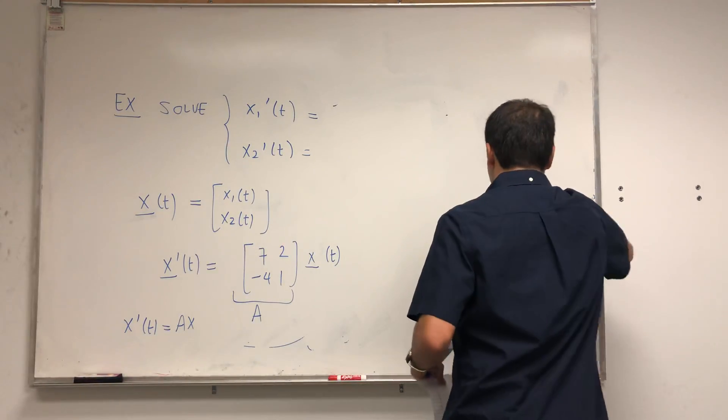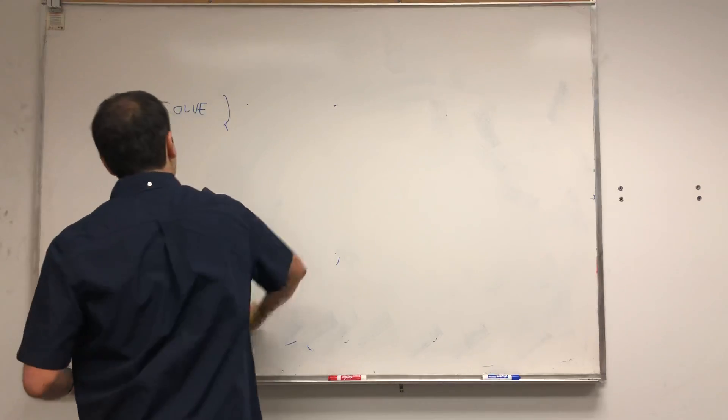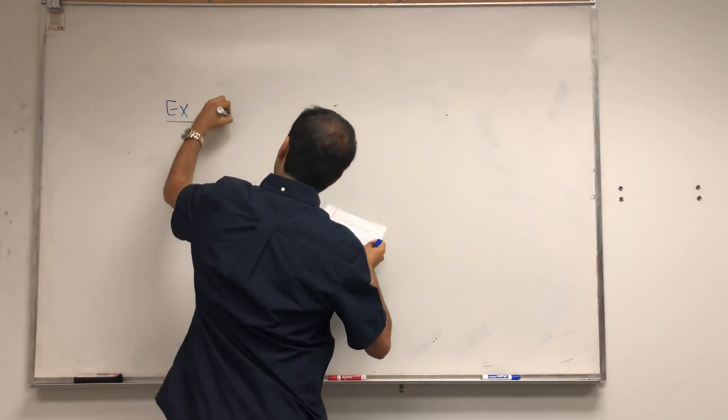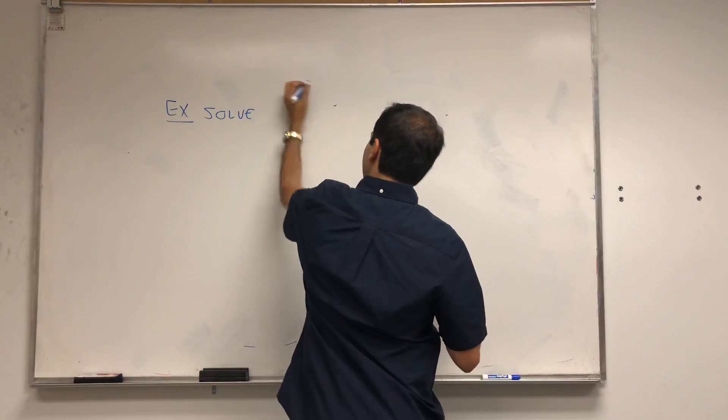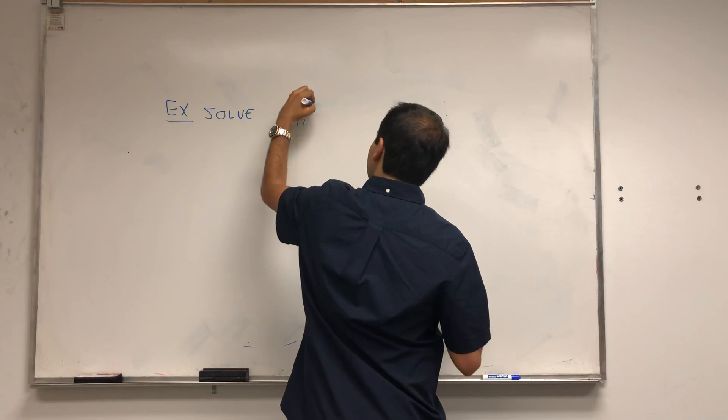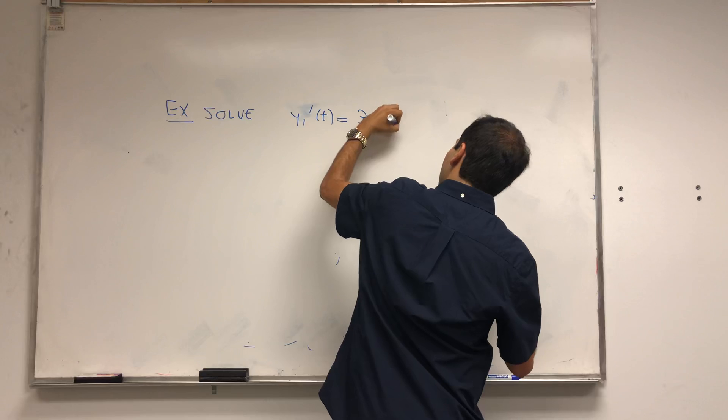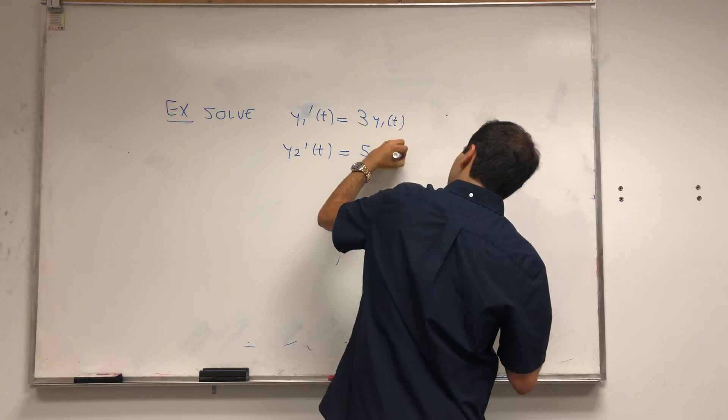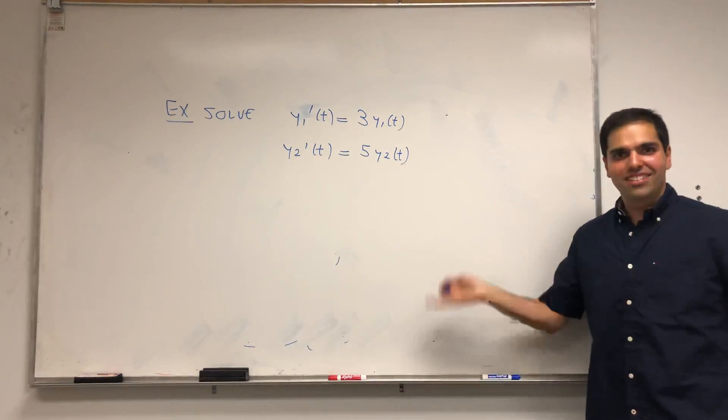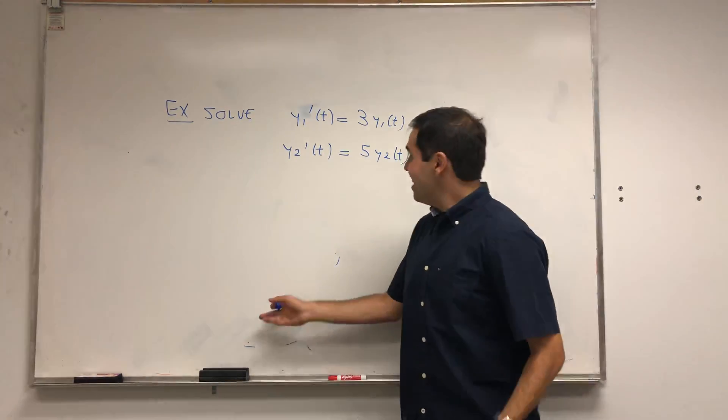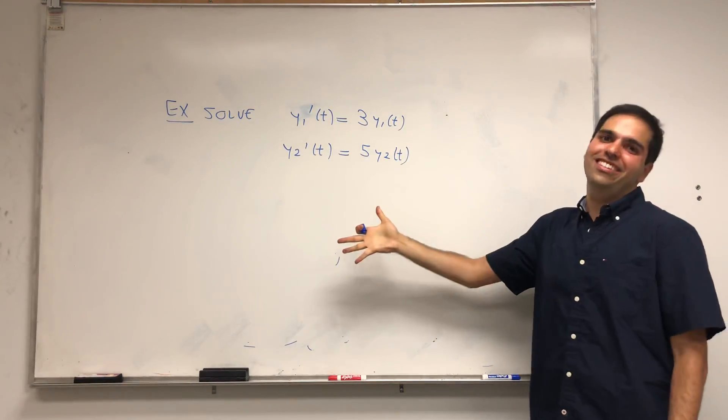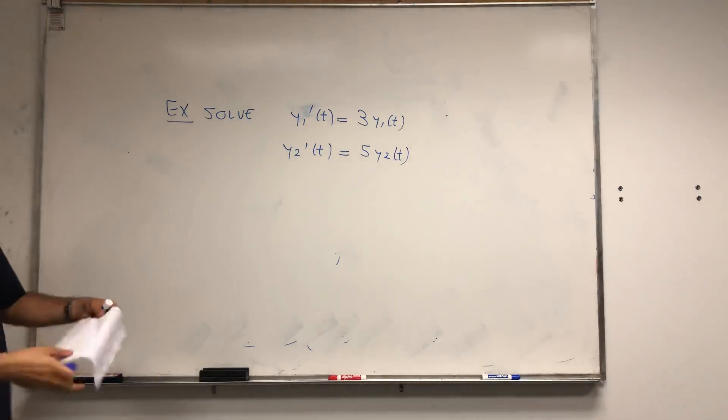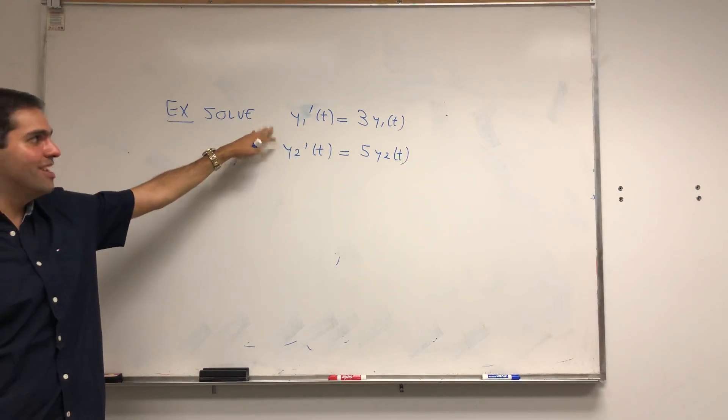How about we solve this example: y1 prime of t equals 3y1 of t, and y2 prime of t equals 5y2 of t. You might say, why are you wasting my time? Yes, this system is so easy to solve, even a calculus one student can do it. Not in a derogatory manner—it's just you don't need much knowledge about differential equations to solve this because those two things are decoupled.